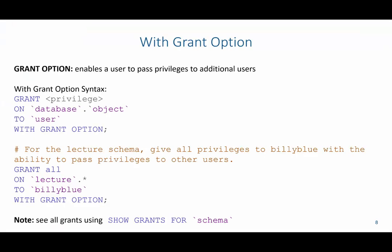Another privilege we can grant is GRANT OPTION, which allows the user to extend the privileges they receive to additional users. The change in syntax is that we use WITH GRANT OPTION after specifying the user. For example, if I wanted to grant all privileges to Billy Blue with the ability to pass those privileges to other users on the lecture schema, I'd say: GRANT ALL ON lecture.* TO BillyBlue WITH GRANT OPTION — giving Billy Blue the ability to grant those privileges to others.